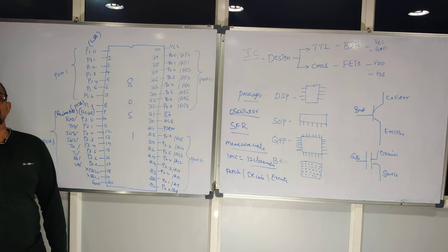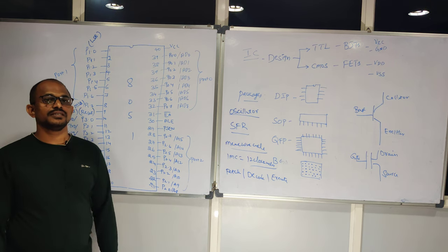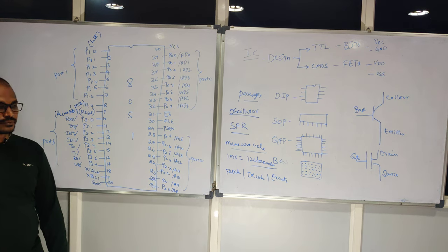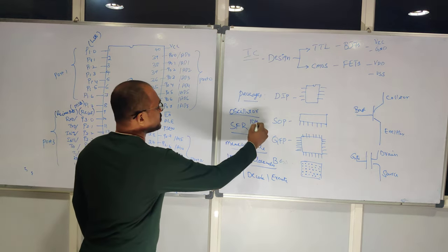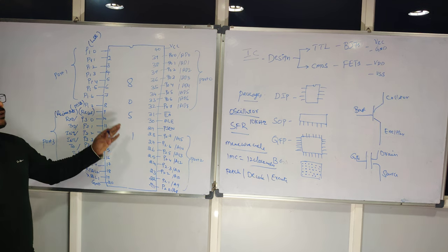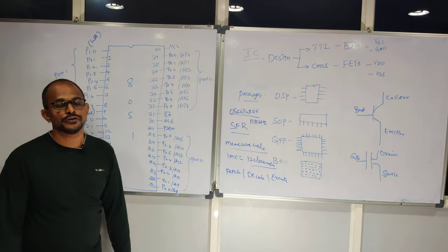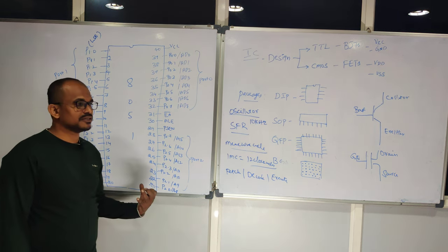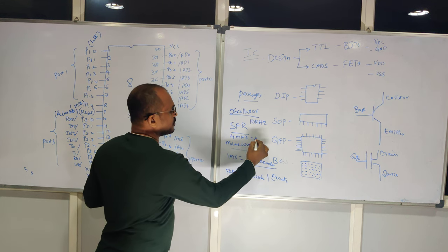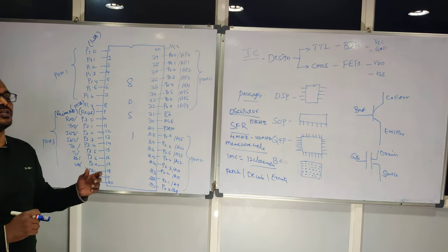The oscillator generates clock cycles at a certain frequency. Frequency is defined as the number of cycles generated per second. The number of cycles generated determines the execution speed of the device. For example, at 10 kHz the device generates 10,000 cycles per second; dividing by 12 gives the number of instructions executed per second. The 8051 family supports oscillator frequencies from 4 MHz to 40 MHz.